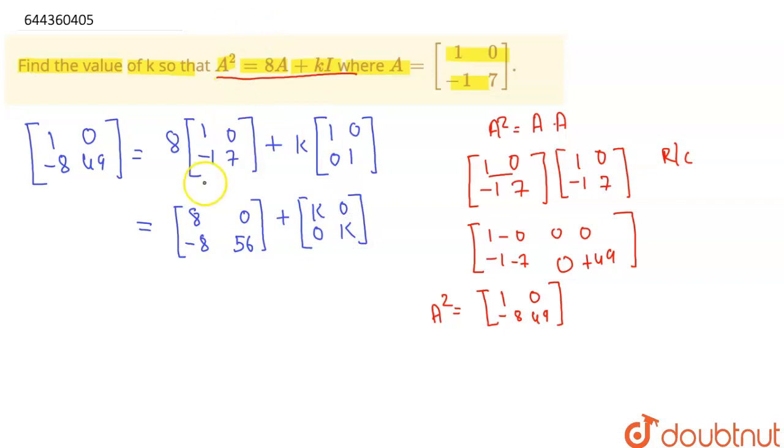So my dear students, now I will compare our equation. This one would be [1, 0, -8, 49]. So I can compare this one and this one because these two are 0.